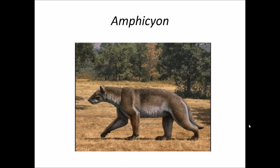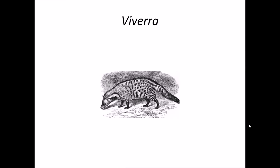In the lower Shivalik, the first genus I am going to discuss is Amphysand. Amphysand belongs to the order Carnivora, which is an order of placental animals that includes animals like cat, tiger, lion, dogs, wolves, bears, etc. Amphysand was a dog-like creature. Vivera was a prehistoric civet and this animal also belongs to the order Carnivora.